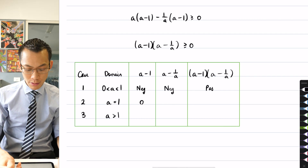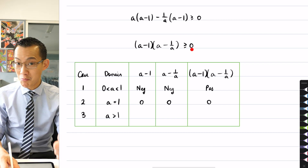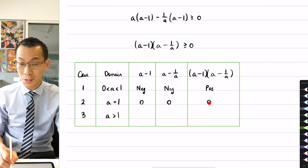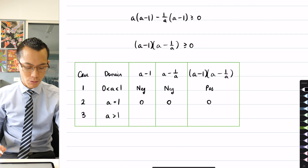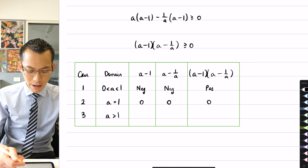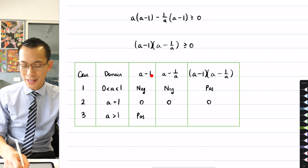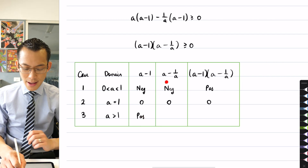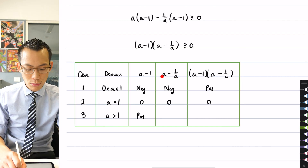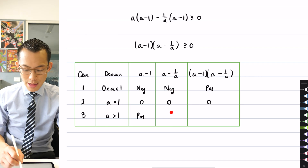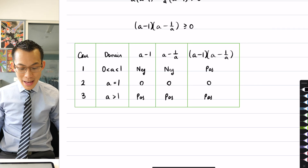When a equals one, a minus one is zero and a minus one over a is also zero, so their product is zero. Zero is greater than or equal to zero — it's the boundary case. When a is greater than one, a minus one is clearly positive. And for a minus one over a, you have a larger number minus a smaller reciprocal — like two minus one half or three minus one third — which is also positive. Two positives multiplied give a positive result.